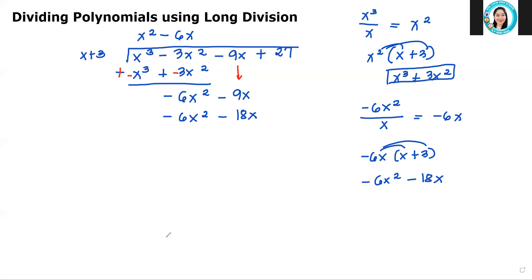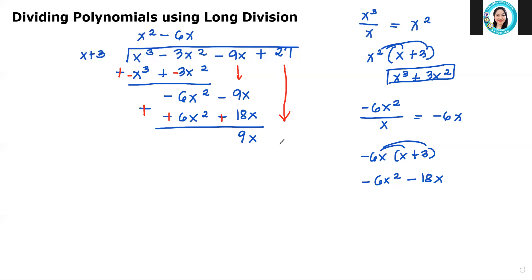Next, we will change the sign since this is subtraction. We will change the sign of the subtrahend: from negative it will become positive, and from negative it will become positive. Then we proceed to addition. So negative 6x squared plus positive 6x squared is zero. And negative 9x plus positive 18x gives us positive 9x. Then we will bring down positive 27.